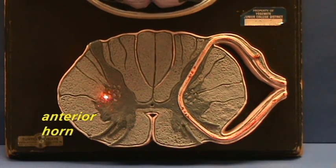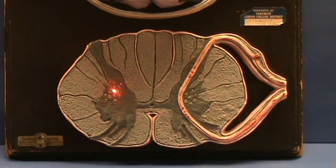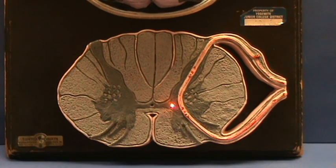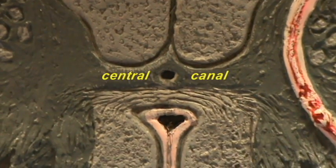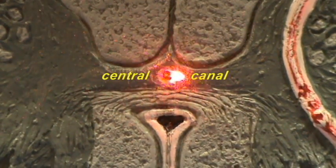In certain regions of the spinal cord, you have a very pronounced bulge of gray matter over here and over here, and that region is referred to as the lateral horn. The crossbar of gray matter has within its center an opening, which is the central canal.